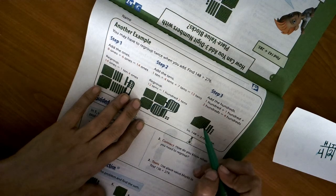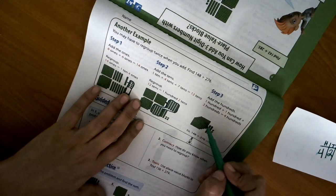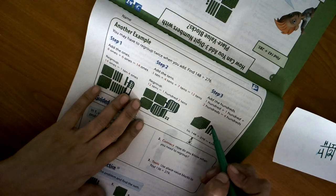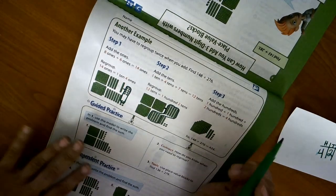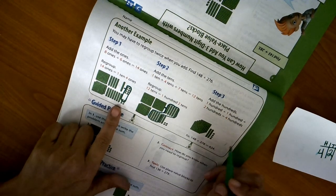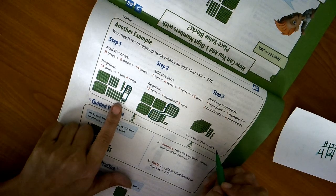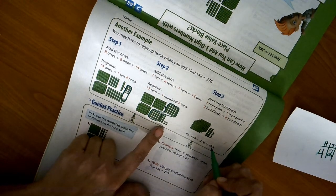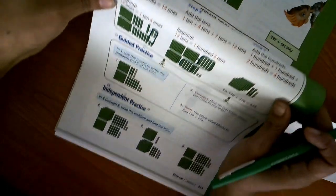Now the last thing you would do is count your hundreds. 1, 2, 3, 4. And then count everything you have. So you have 4 ones left, 2 tens, and 4 hundreds. And your answer is 424.